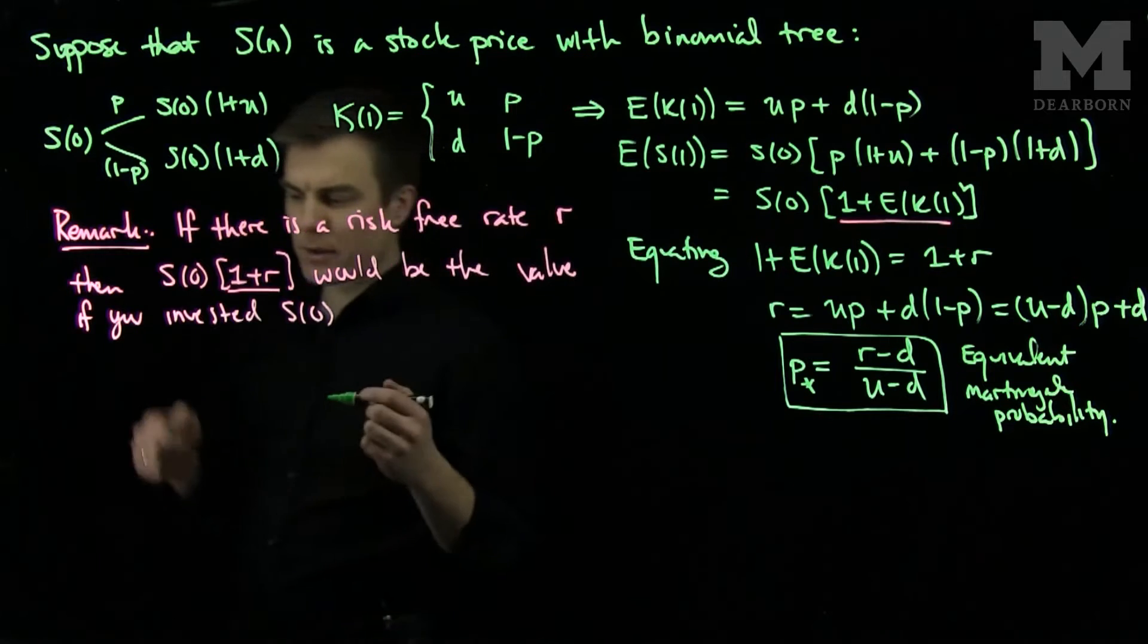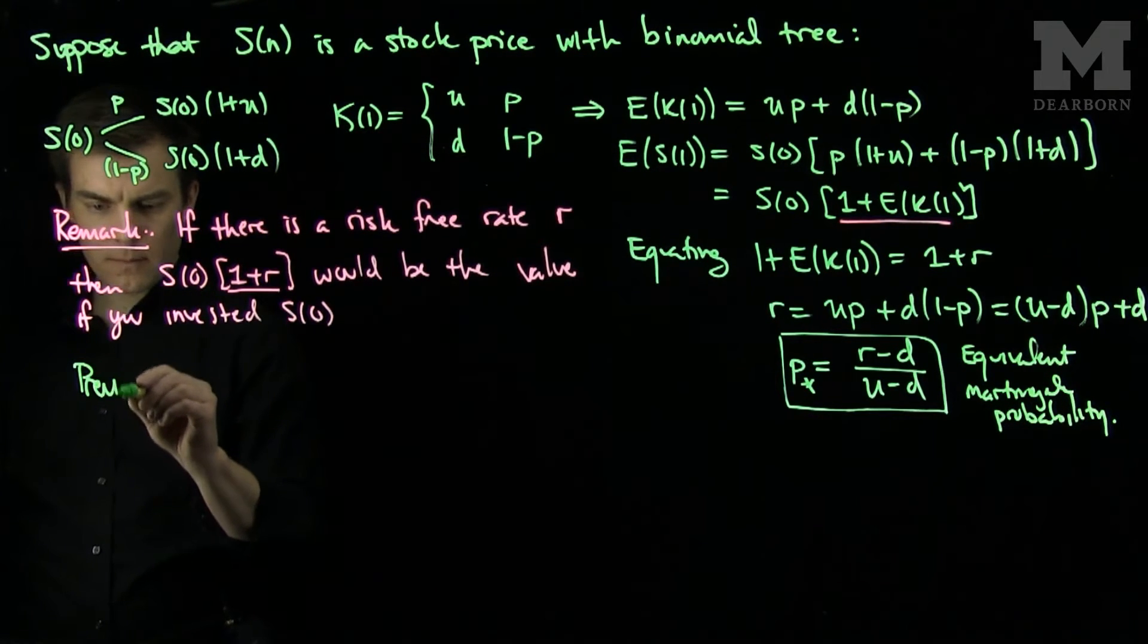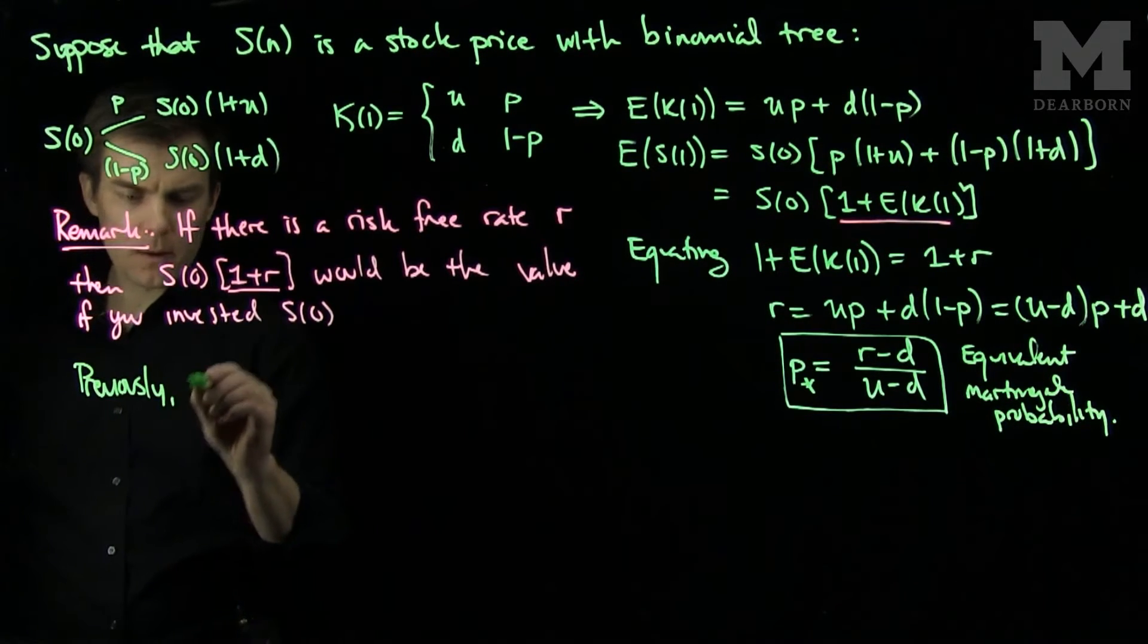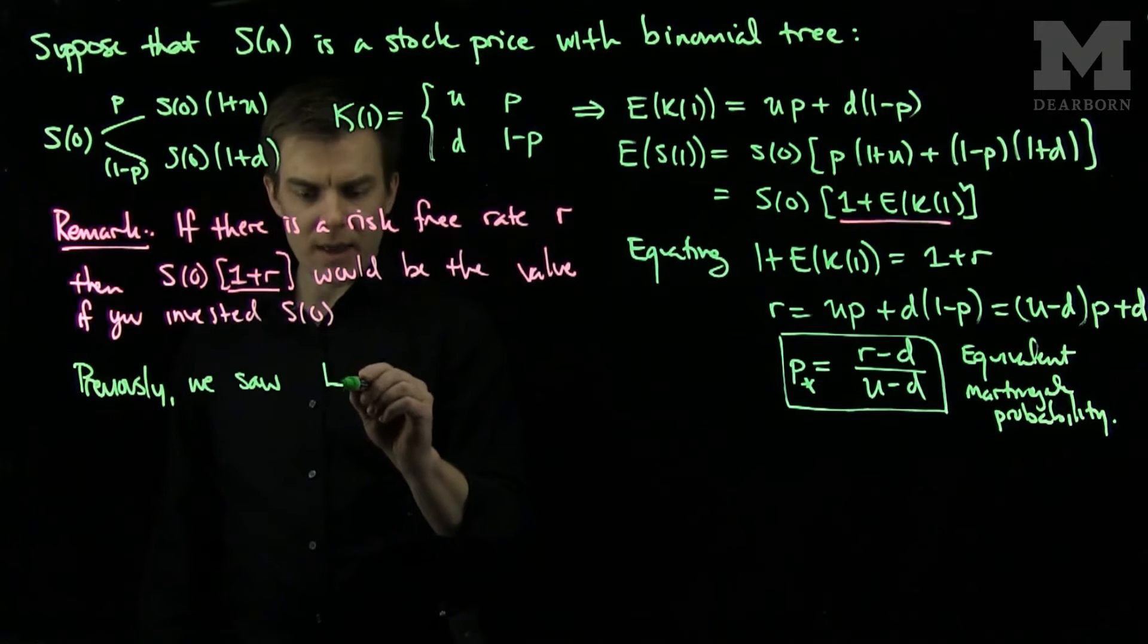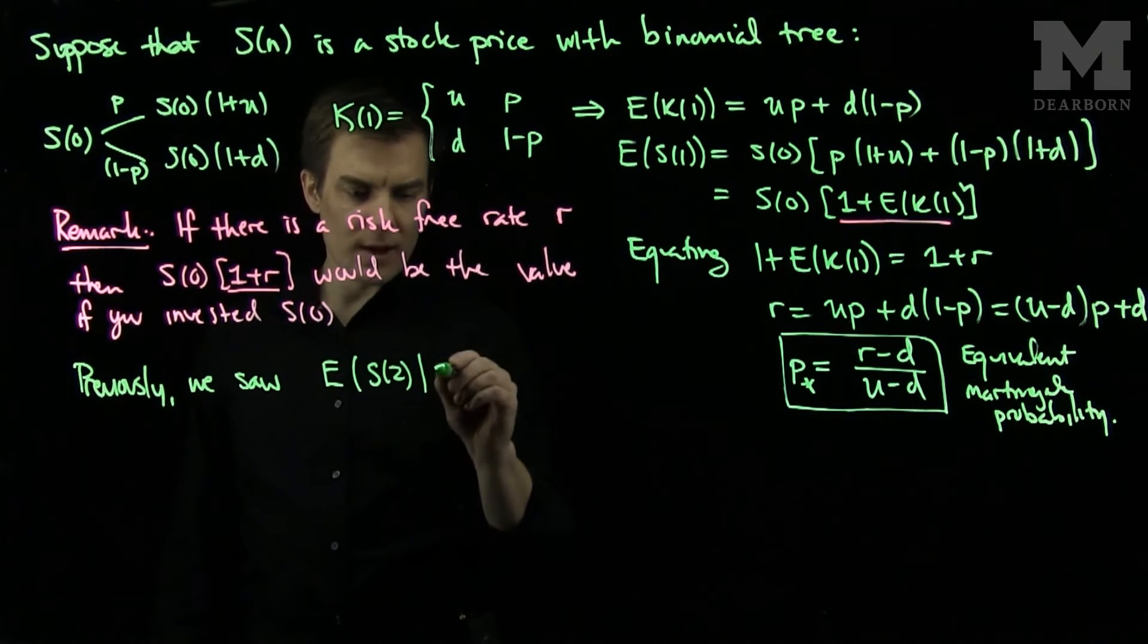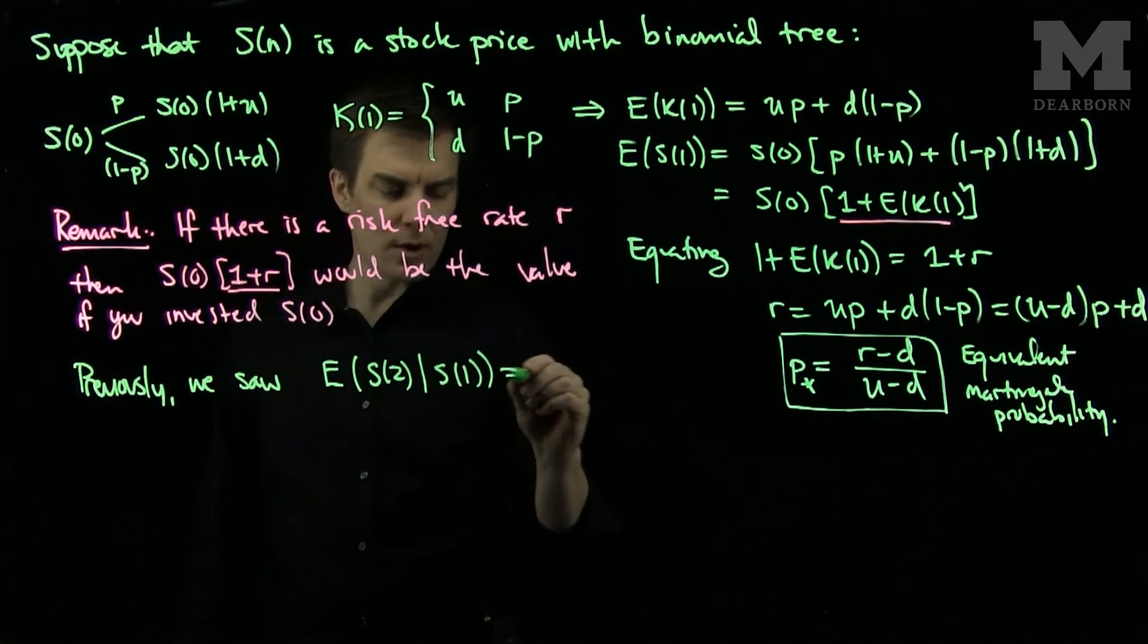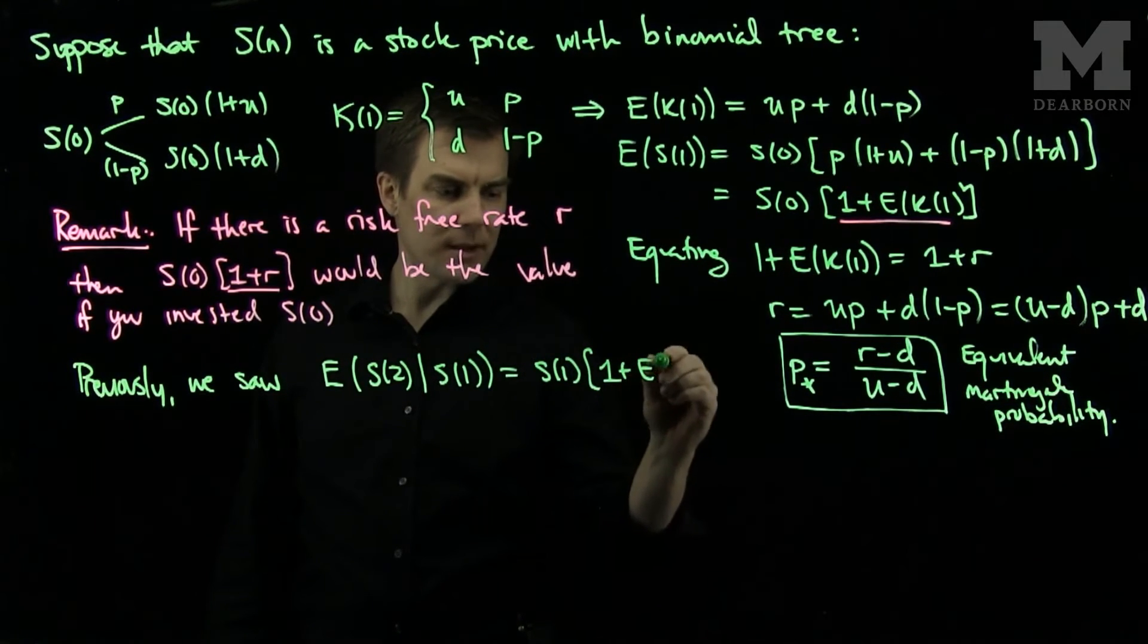Now we saw in previous videos the following: Previously we saw that the expected value of S_2 given S_1 was S_1 times [1 plus the expected value of K_1]. We saw this result previously.